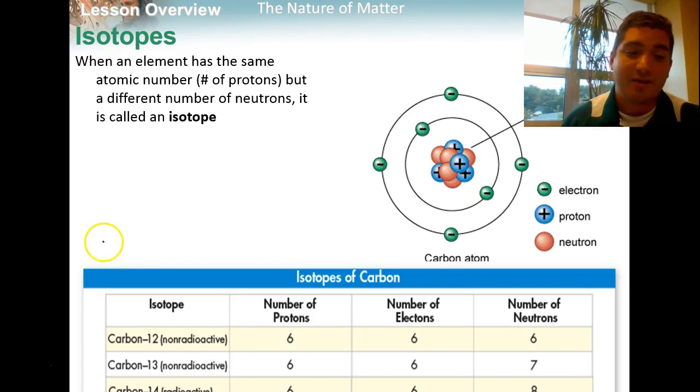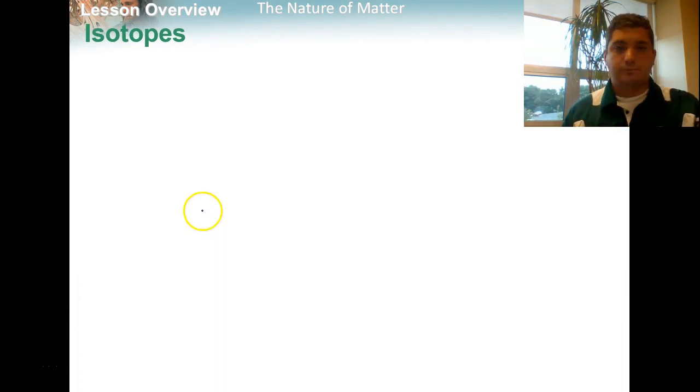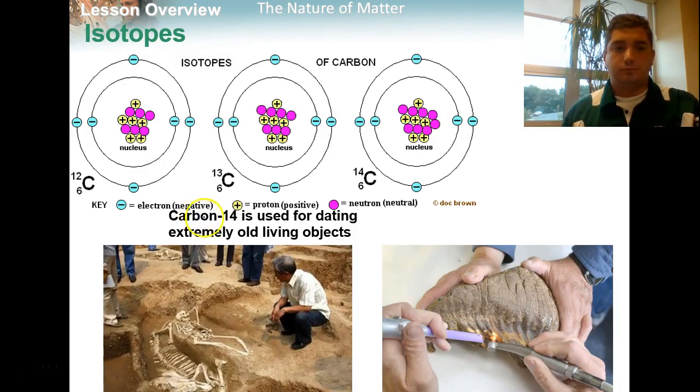So final formula, in order to find out if an element is an isotope, you can take the mass number, subtract the number of protons, and you will get the number of neutrons. If the number of neutrons is different than the atomic number, you have an isotope.